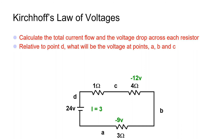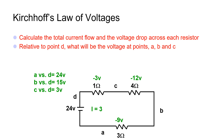Relative to point D, let's find the voltage at points A, B, and C. The voltage at point A will be 24 volts, as the voltage has not dropped yet. The voltage at point B will be 15 volts, because 9 volts dropped across the first resistor, and subtracting that from the 24-volt source leaves 15 volts. We drop 12 volts across the second resistor, leaving 24 minus 9 minus 12, or 3 volts at point C. The last 3 volts drop across the third resistor for a total of 24 volts.